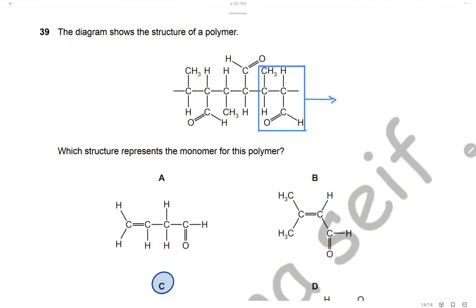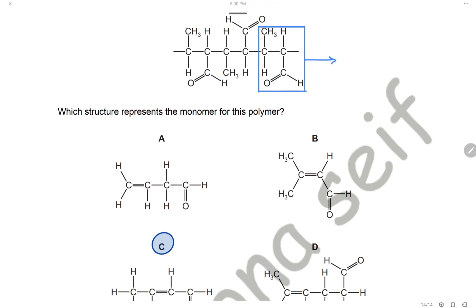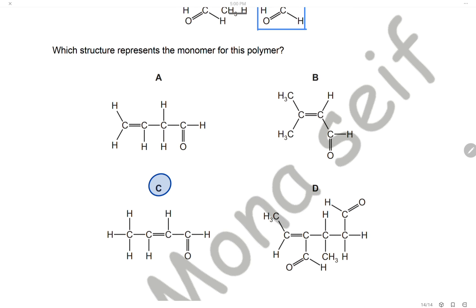Question 39: The diagram shows the structure of a polymer. The repeating unit in the blue box is the monomer. To draw the monomer, remove the open ends and add a double bond between the two carbon atoms. Carbon 1 has a hydrogen and a C=O–H group; carbon 2 has a hydrogen and a methyl group. Checking the structure: carbon 1 has H and COOH; carbon 2 has H and a methyl group. The correct structure for the monomer is C.